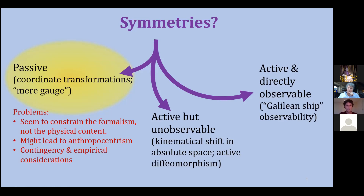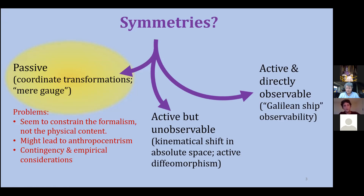This passive view definitely has problems — and I think they are good problems. A major problem, famously raised in the context of general covariance, is that passive symmetries seem to constrain the formalism and not the physical content of theories. This might lead to anthropocentrism if we claim we're learning about the world only through the way we describe it from our perspective. There is also the problem of contingency, because if you're talking about passive symmetries and mathematical transformations, what is contingent about the claim?